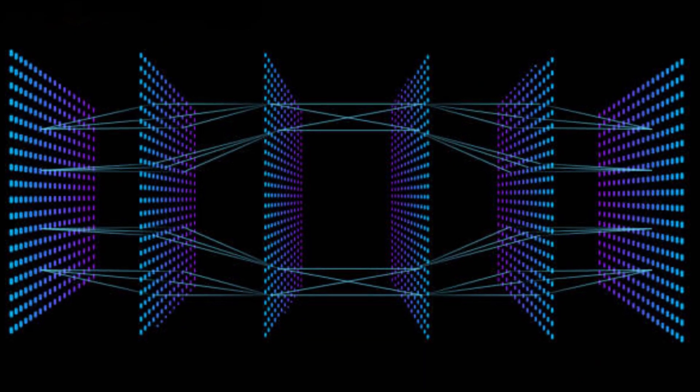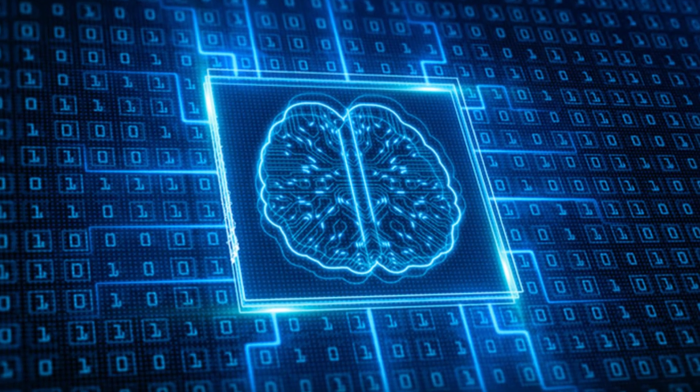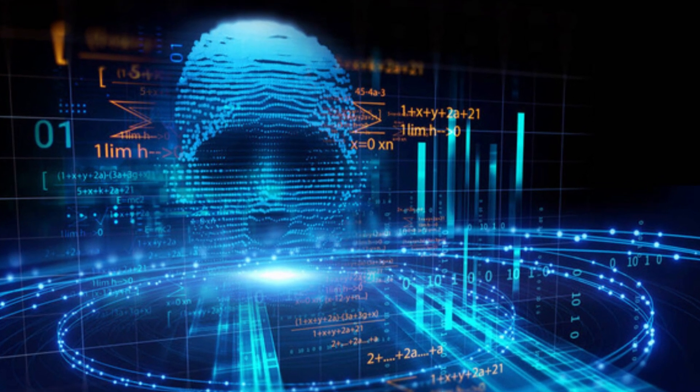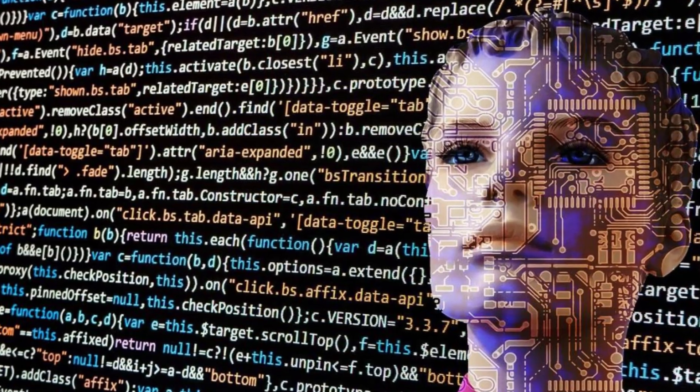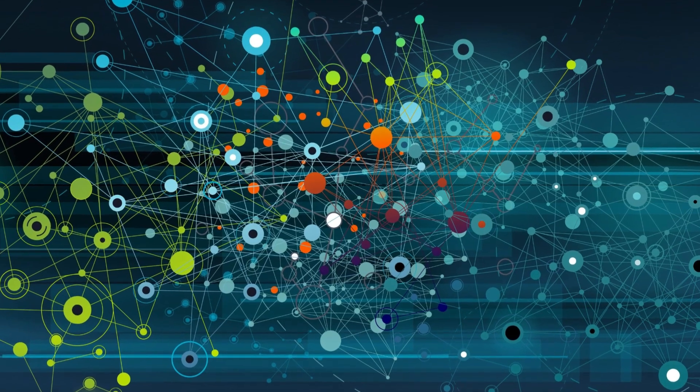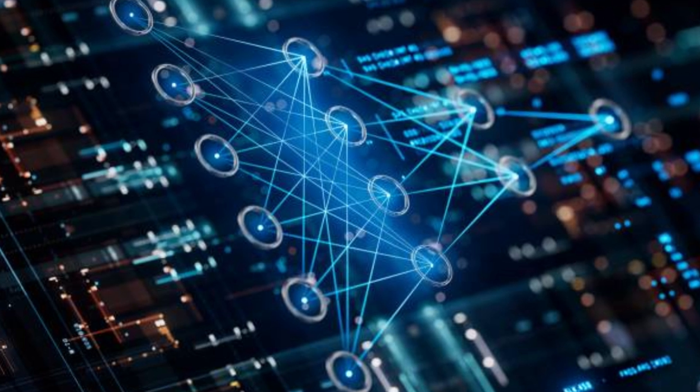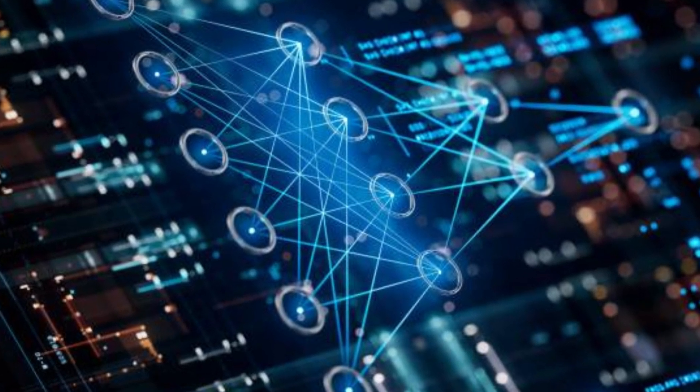Through a process called training, where the network is exposed to large amounts of labeled data, such as images, text, or sound, deep learning models adjust their internal parameters to learn the underlying patterns and relationships within the data.